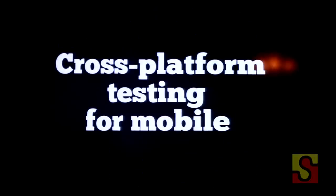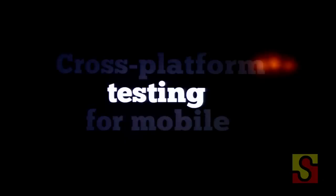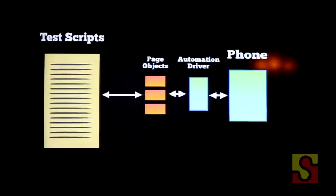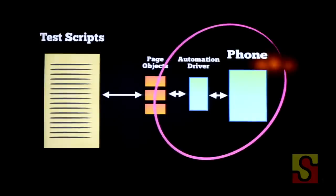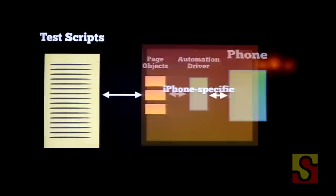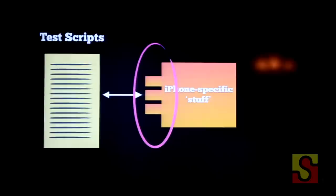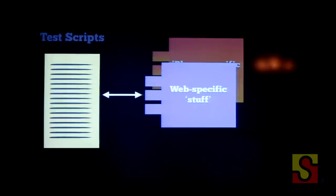I said I was going to talk about cross-platform testing for mobile but I haven't — I've just talked about testing. So let me talk about cross-platform testing for mobile. With our familiar diagram, all the stuff on the right-hand side is the iPhone-specific stuff inside your testing system. These page objects are presenting an interface for your high level user-focused test scripts to talk to your iPhone — they're presenting a test interface to your application. And this is an interface, and you can swap out interfaces.